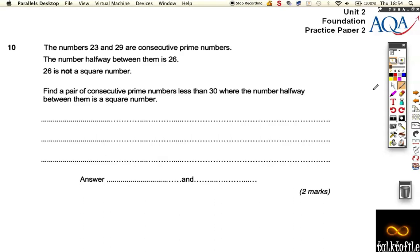Here we go, number 10. The numbers 23 and 29 are consecutive prime numbers. The number halfway between them is 26. 26 is not a square number. Find a pair of consecutive prime numbers less than 30 where the number halfway between them is a square number.